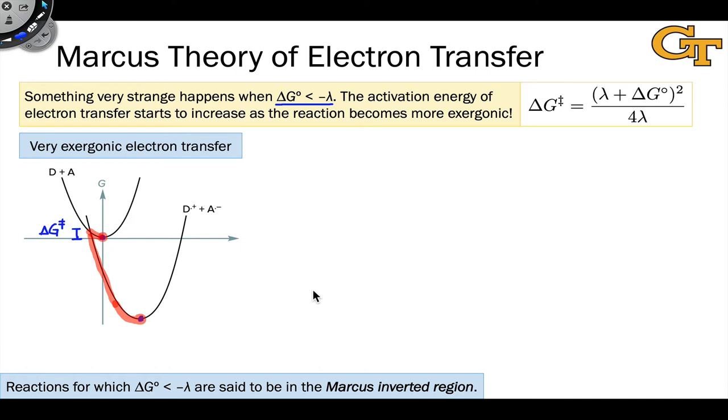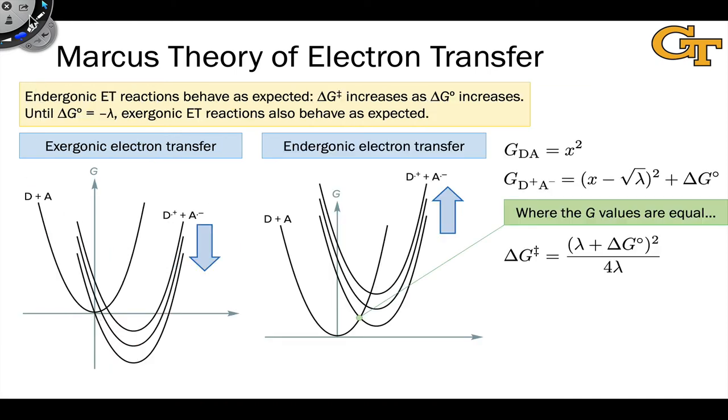And then, and only then, can it cross over to the product potential energy surface and reach that equilibrium point. Notice that there's a barrier here, and that that barrier is greater than it would be if our thermodynamic free energy difference were equal to the reorganization energy. In fact, that's the situation on the last slide. In this really interesting case, where the place where the potential energy surfaces intersect is the equilibrium position of the D+A well. In this situation, the thermodynamic free energy difference is the reorganization energy. And this is a barrierless situation. There is no activation barrier.